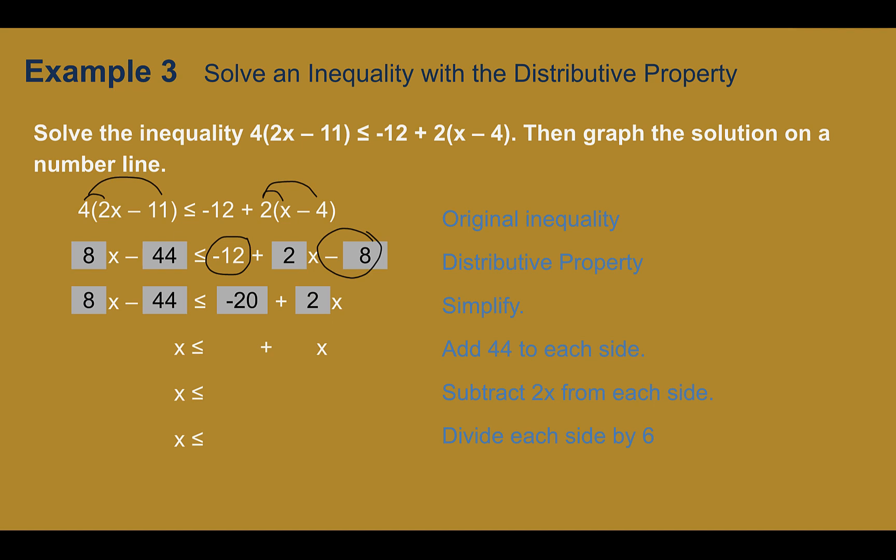Now I have a variable on both sides and a number on both sides. So I need to get the variables on one side and the numbers on the other. I'm going to add 44 to both sides so I can start getting the x by itself. And when I do that, I would end up with 24 and then still the 8x, still the 2x. Now I'm going to subtract 2x to get it away from the number because I also have a variable over here. 8 minus 2 is 6x and then the 24 bring down. Finally, divide both sides by 6. x ≤ 4. I do not have to flip the sign because I never multiplied or divided by a negative.